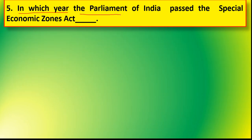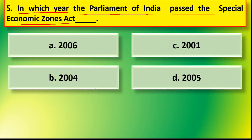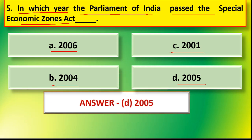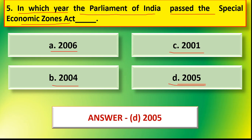Next question: in which year did the parliament of India pass the Special Economic Zone Act? Options are option A 2006, option B 2004, option C 2001, or option D 2005. The correct answer is option D 2005. In 2005 the parliament of India passed the Special Economic Zone Act, known as the Special Economic Zone Act 2005.